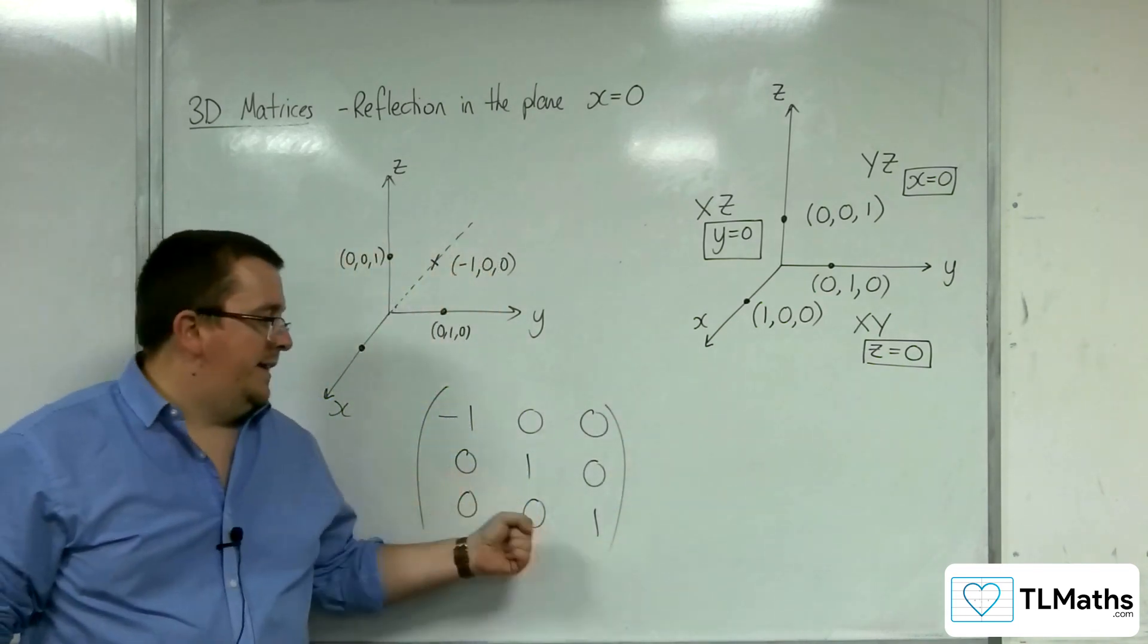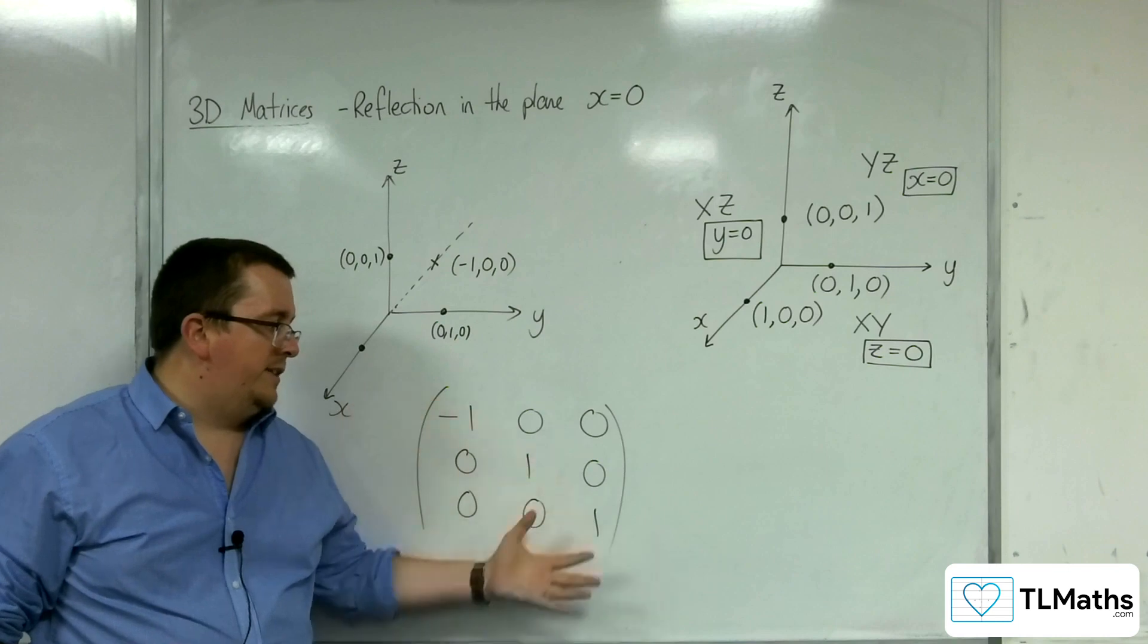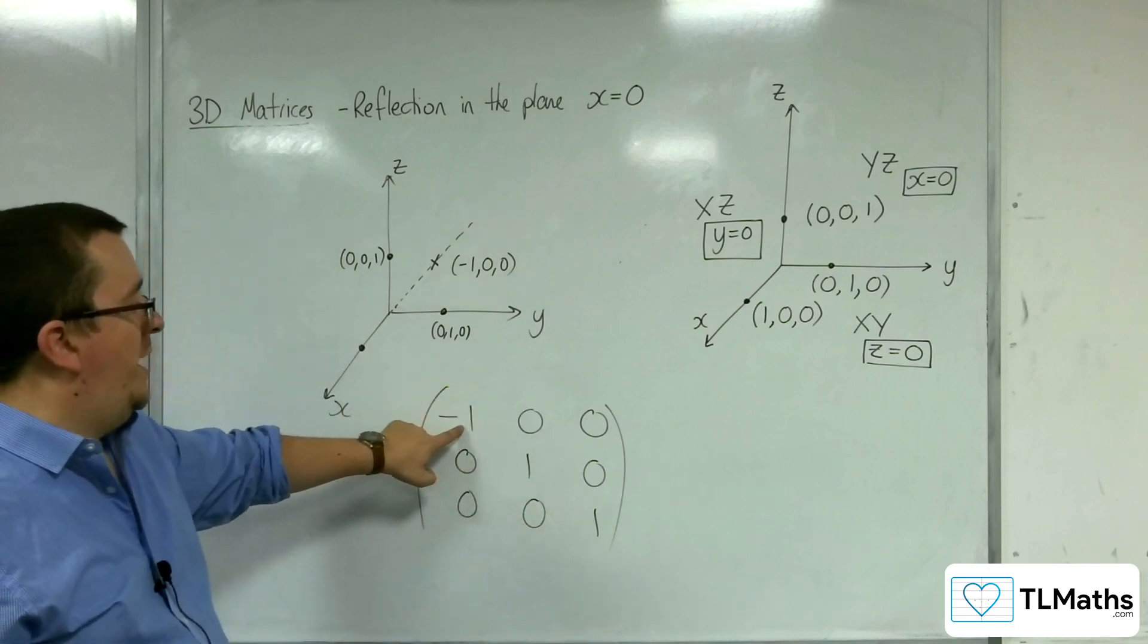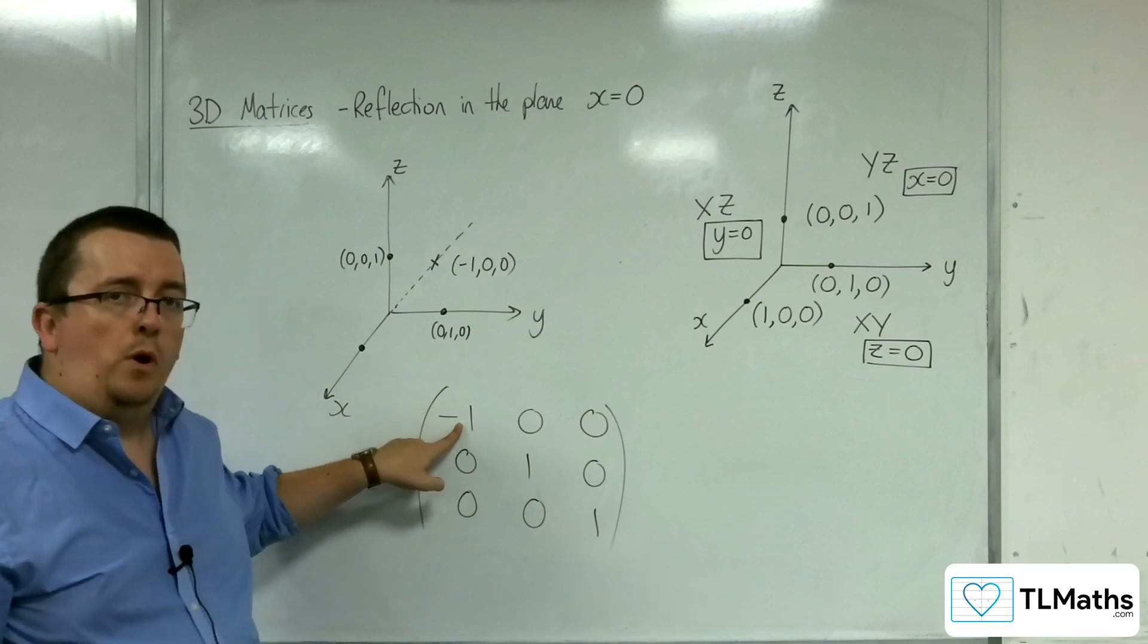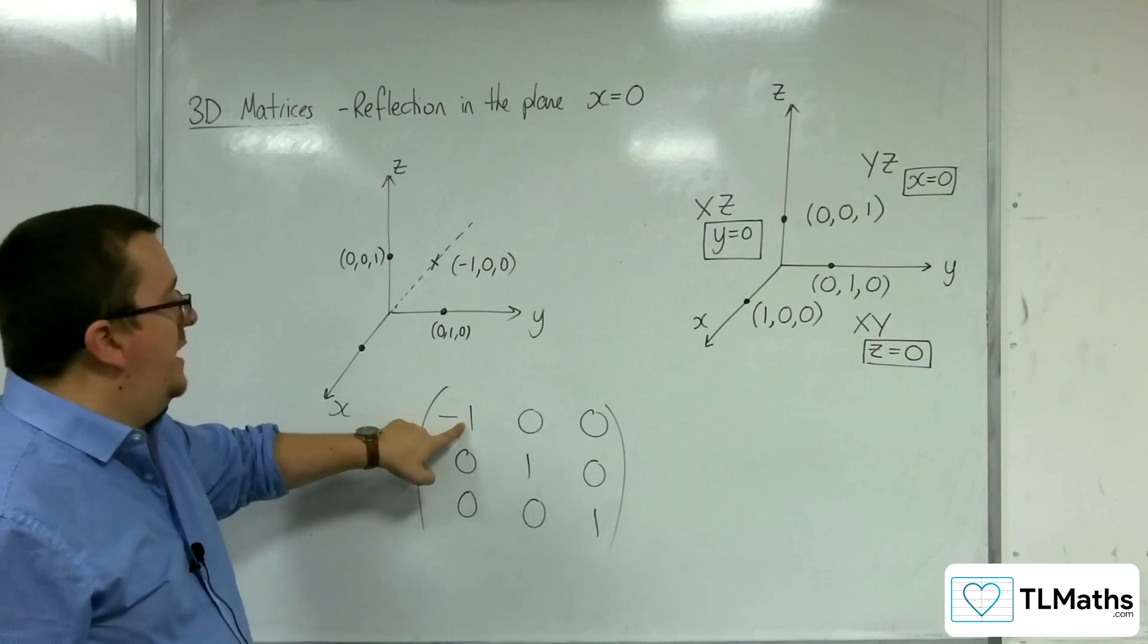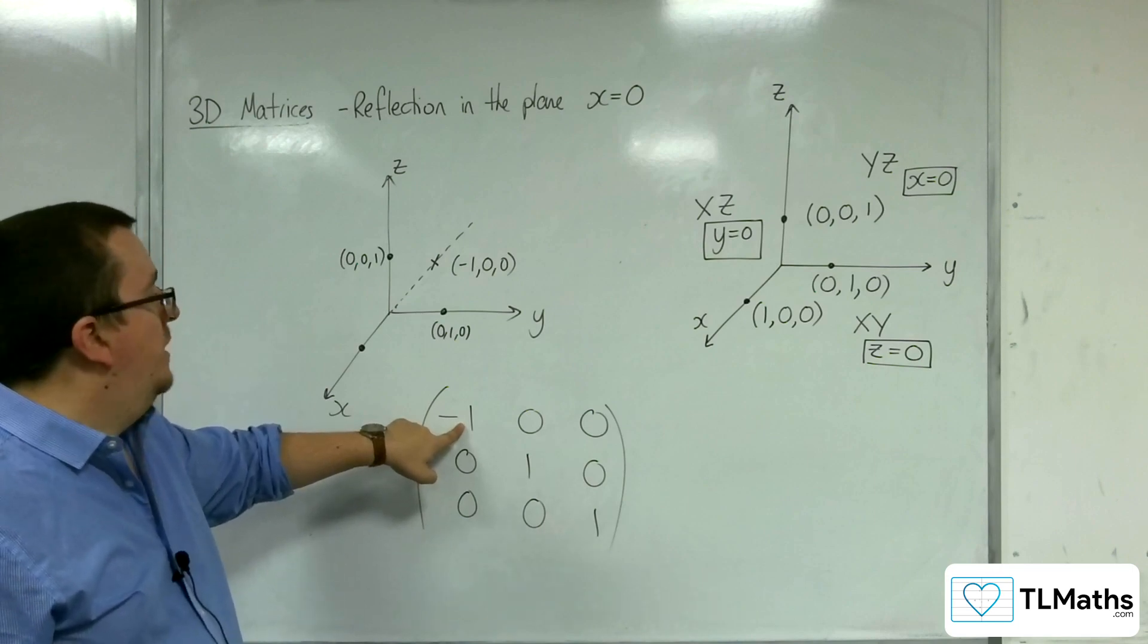So you could immediately identify from a matrix like this that the identity matrix has changed to that one being negative 1. So that means that it has reflected in that one plane, which is x equals 0.